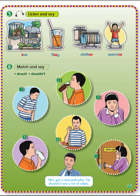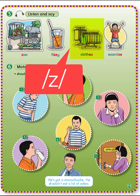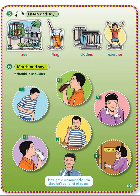Five: listen and say, page 59. You will hear words with the Z sound. في صوت من أصوات اللغة الإنجليزية يُنطق Z. مثال: zoo, fizzy, clothes, exercise. Six: match and say — should and shouldn't.